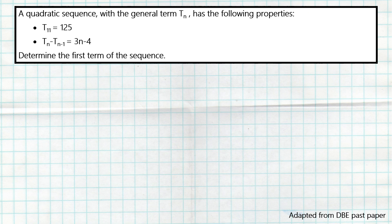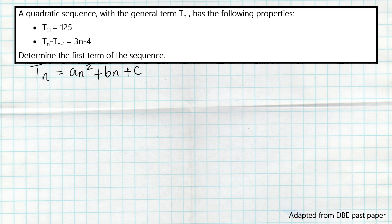Remember this is a quadratic sequence. We are looking for term number one. You can ask yourself how we can express term number one in a quadratic sequence. The general formula is Tn = an² + bn + c, meaning if I need term one, I substitute n=1: T1 = a(1²) + b(1) + c, so term number one is basically a plus b plus c.